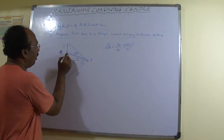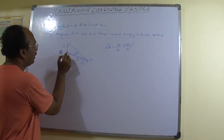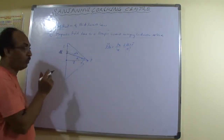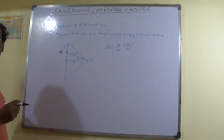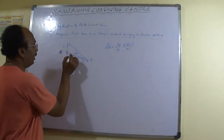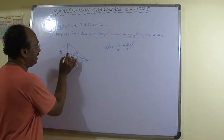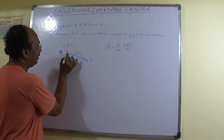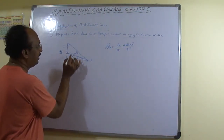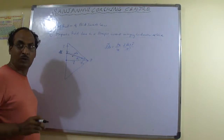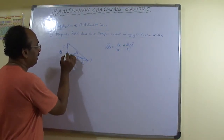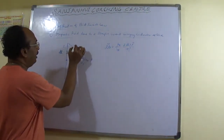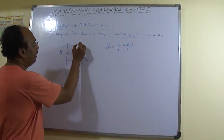Draw a perpendicular from the wire to point B. Let this perpendicular distance be x. Now, this particular element dL, when expressed in terms of the arc, will be x·dθ. This is because for a circle, arc length equals radius times angle.